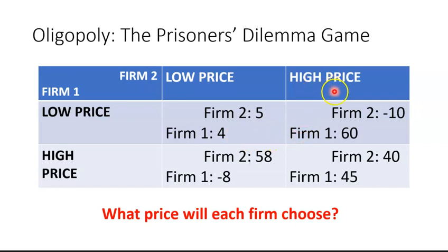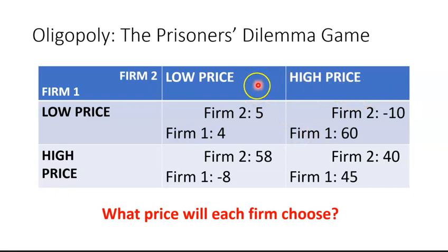On the other hand, firm one could ask: what would I best do if firm two chooses the high price? Given the numbers, firm one is going to be best off choosing the low price — undercutting firm two and getting profits of 60 instead of profits of 45, which it would get if it chose the high price. Conclusion: no matter what firm two does, high price or low price, firm one is best off choosing the low price.